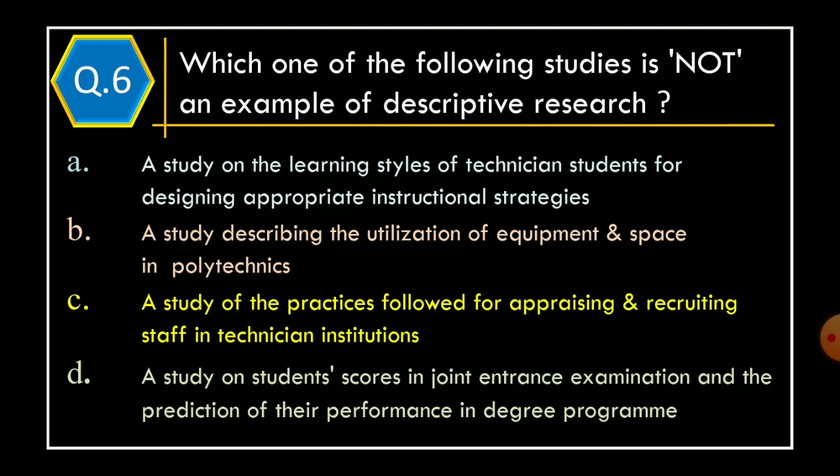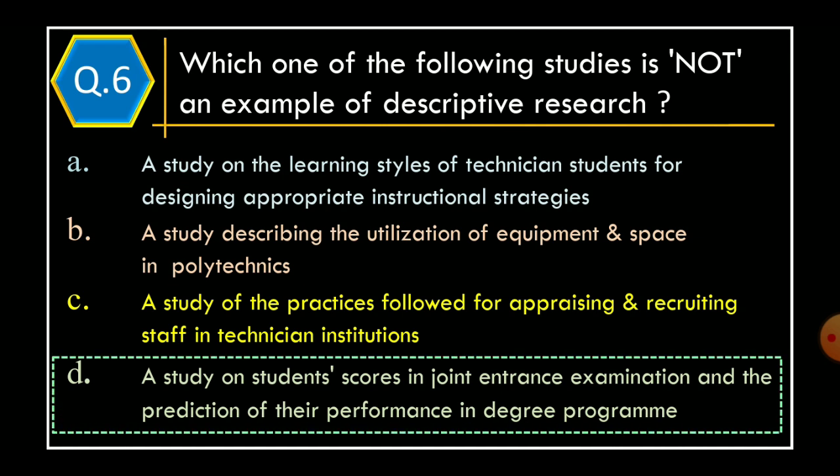Question 6: which one of the following studies is not an example of descriptive research? Option A: a study on the learning styles of technician students for designing appropriate instructional strategies. Option B: a study describing the utilization of equipment and space in politics. Option C: a study of the practices followed for appraising and recruiting staff in technician institutions. Option D: a study on students' scores in joint entrance examination and the prediction of their performance in degree program. The correct option is Option D.